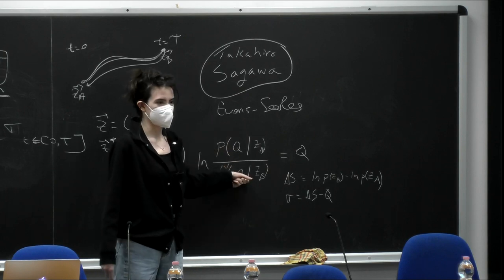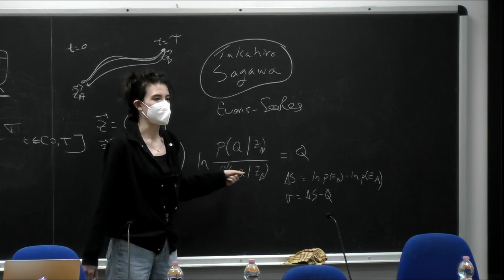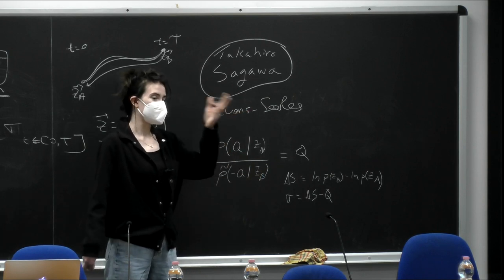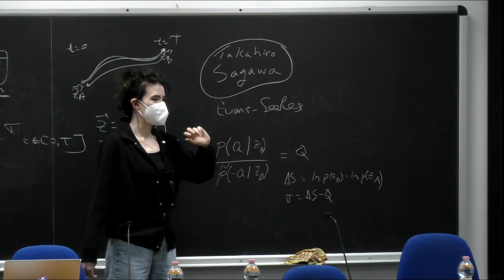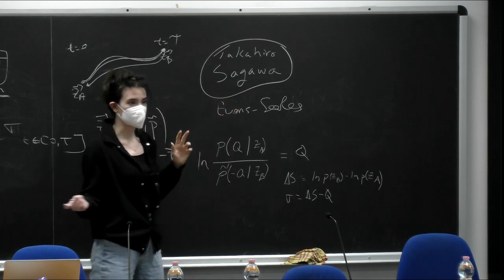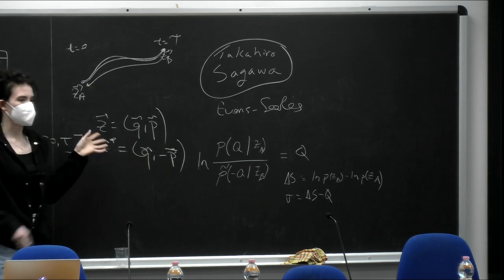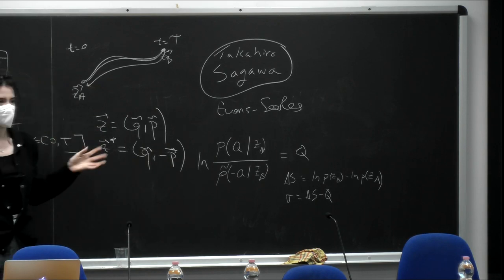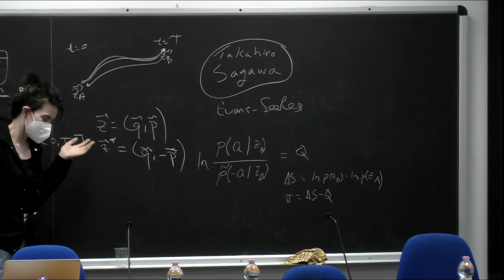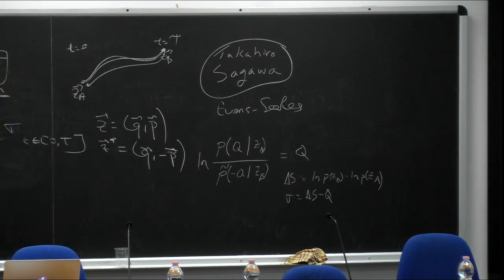Just for historical reasons: why do we call these detailed fluctuation theorems? The fluctuation theorems derived in the 90s just came with the name fluctuation theorems. This Jarzynski 2000 paper is the first paper that actually uses the word 'detailed' in a fluctuation theorem — exactly because you have dependence on the initial and final states, reminding you of the detailed balance condition. Since then, researchers call anything with that structure a DFT.